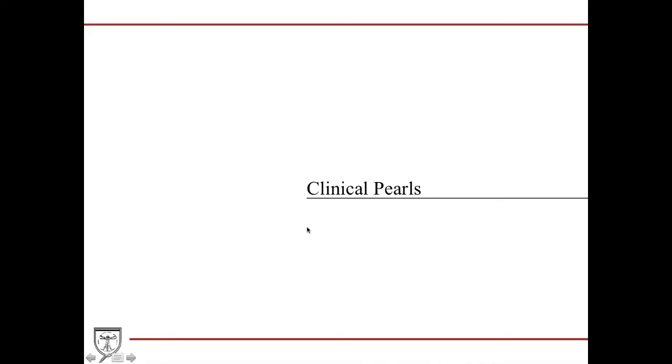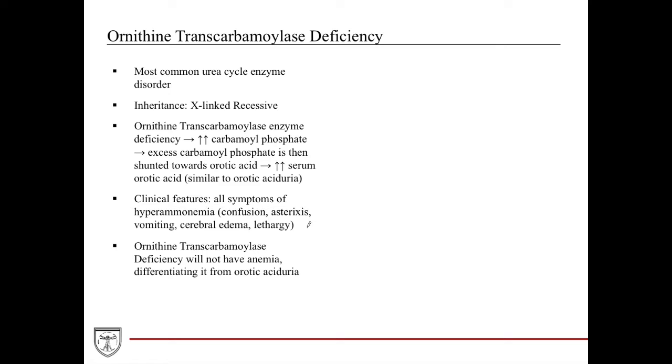Now we're going to talk about some clinical pearls that are related to the urea cycle. The first one I'm going to talk about is ornithine transcarbamylase deficiency. This is the most common urea cycle enzyme disorder.